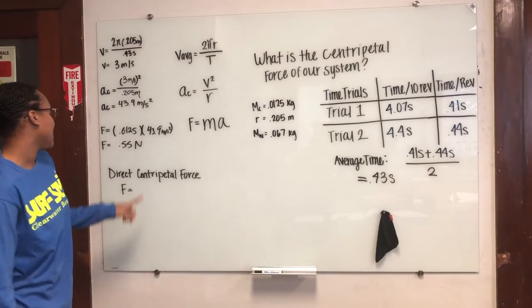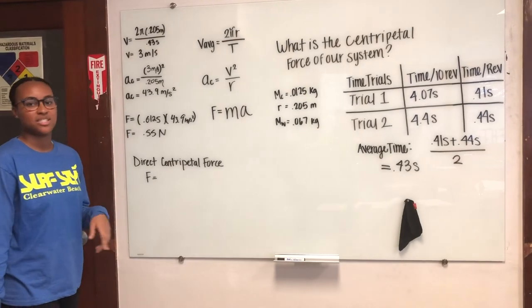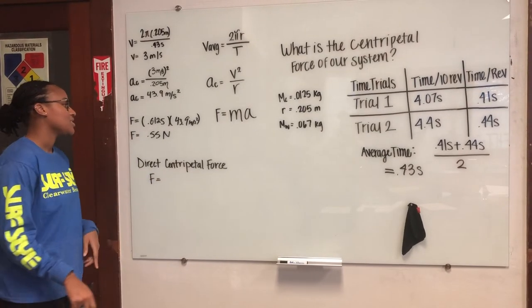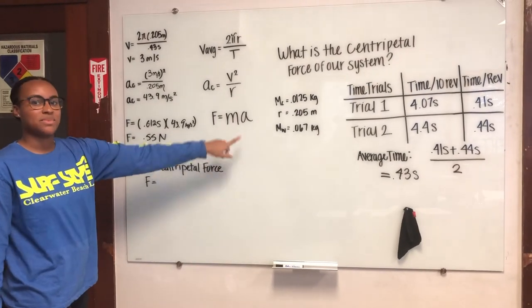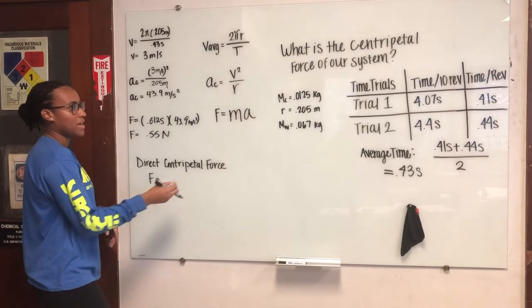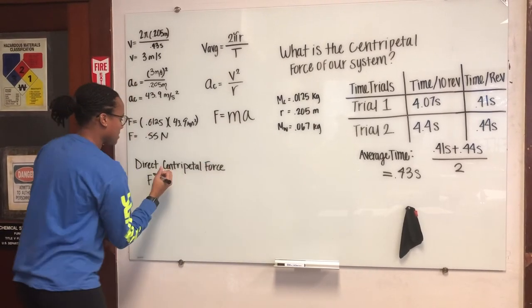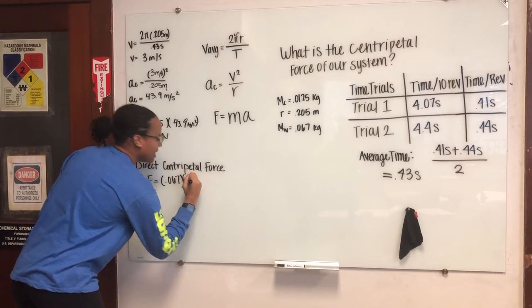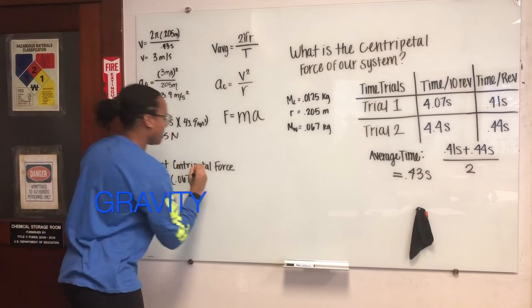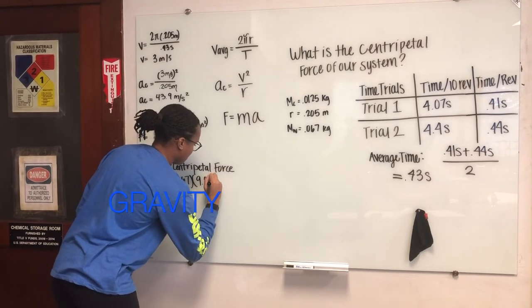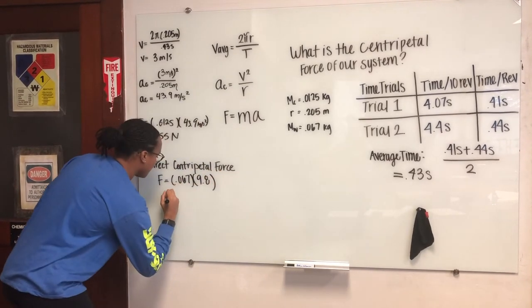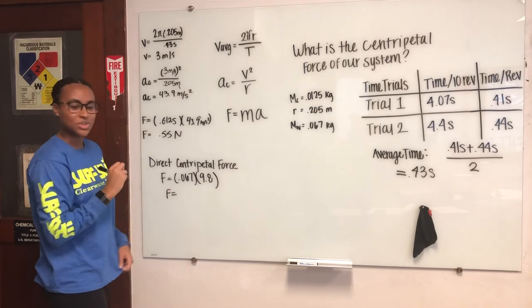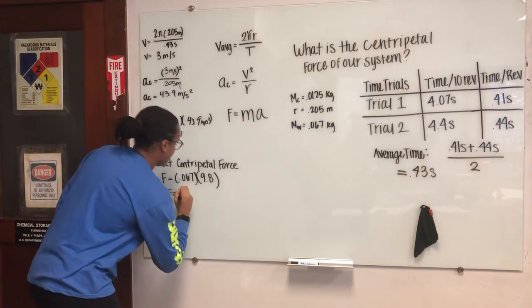So next we want to find the direct centripetal force. So to do that, we did F equals M times A. And then the mass of the weight at the bottom was 0.067, and then we times that by 9.8 meters per second. So the force equals 0.66 newtons.